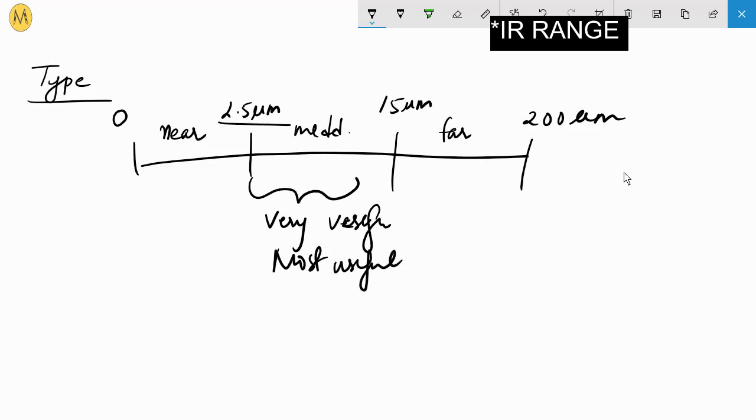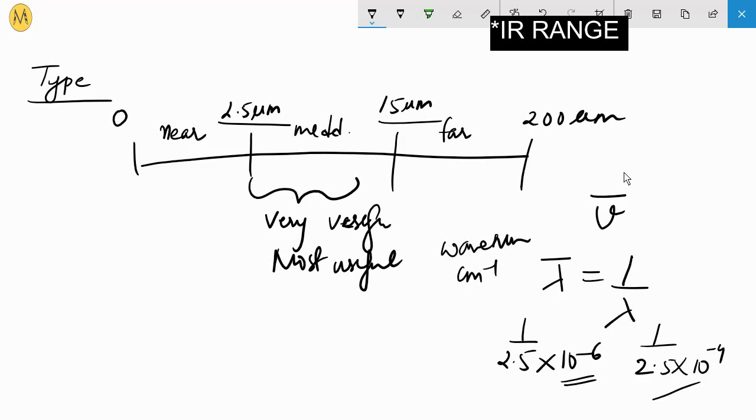This is the value of lambda. When we plot the IR graph, we measure in terms of wave number. Wave number or lambda dash equals 1 upon lambda. When you calculate this, the lower range will be 4000 centimeter inverse to 667 centimeter inverse.